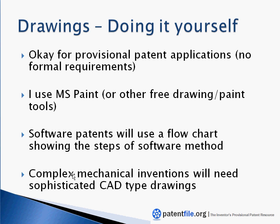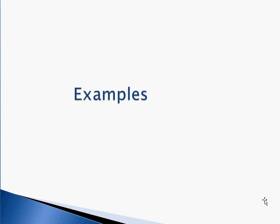If your invention is very complex — a mechanical invention with lots of moving parts and pieces — you may have to invest in some CAD software. Chances are if you're inventing in that space, you probably already have the tools and software to make black and white line drawings, so just use those as your provisional patent drawings. In the second video, we're going to go over some examples and show you really quickly how to do a patent drawing.